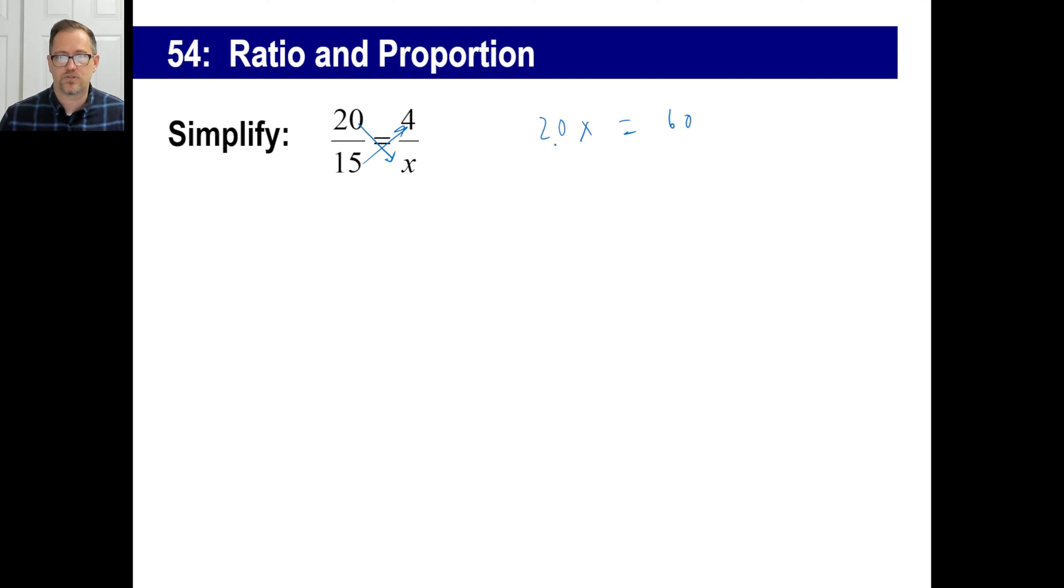Now we can solve for x. Now we have an equation. So we just divide each side by 20. And then 60 divided by 20 is 3. There we go. We just solved what x was. x is 3. That's it. Let's try another one. Pause this and copy.